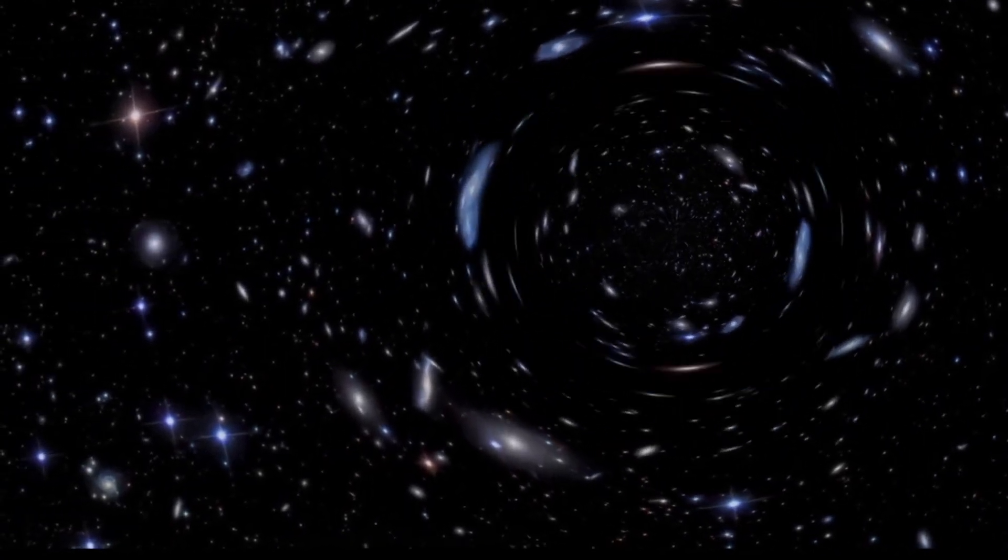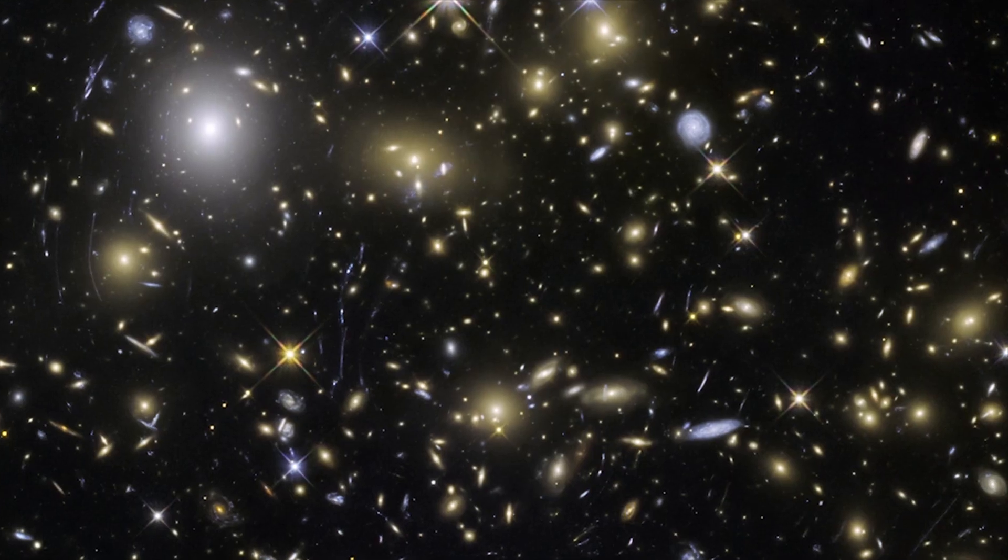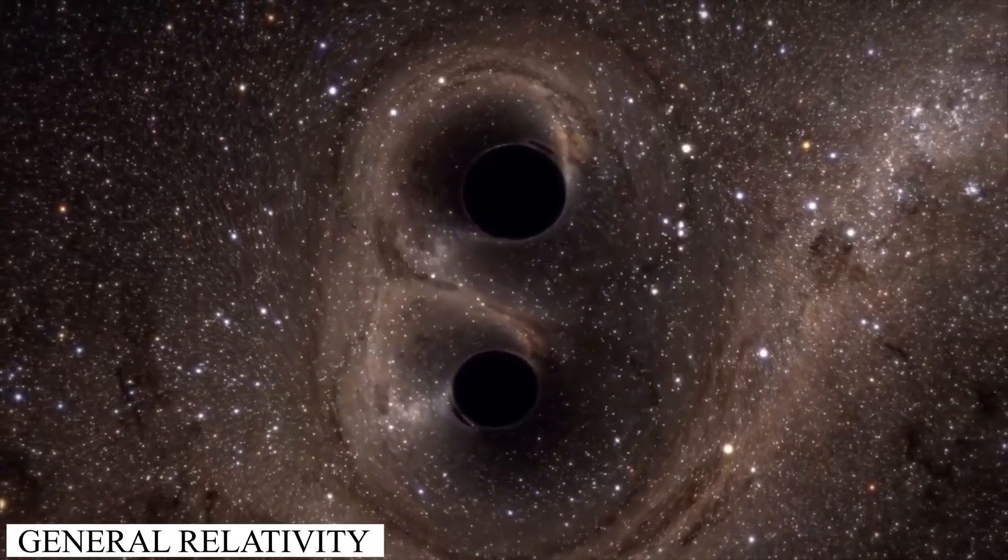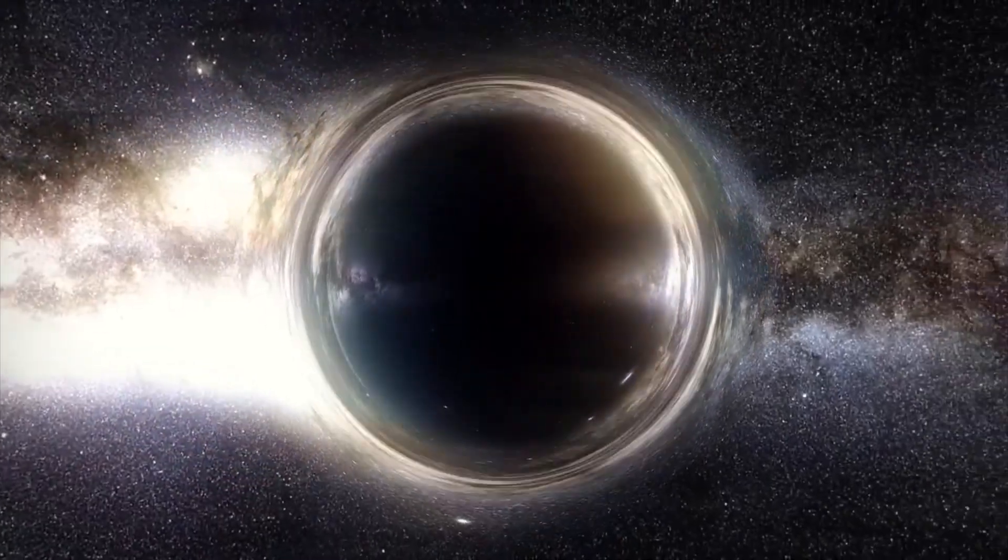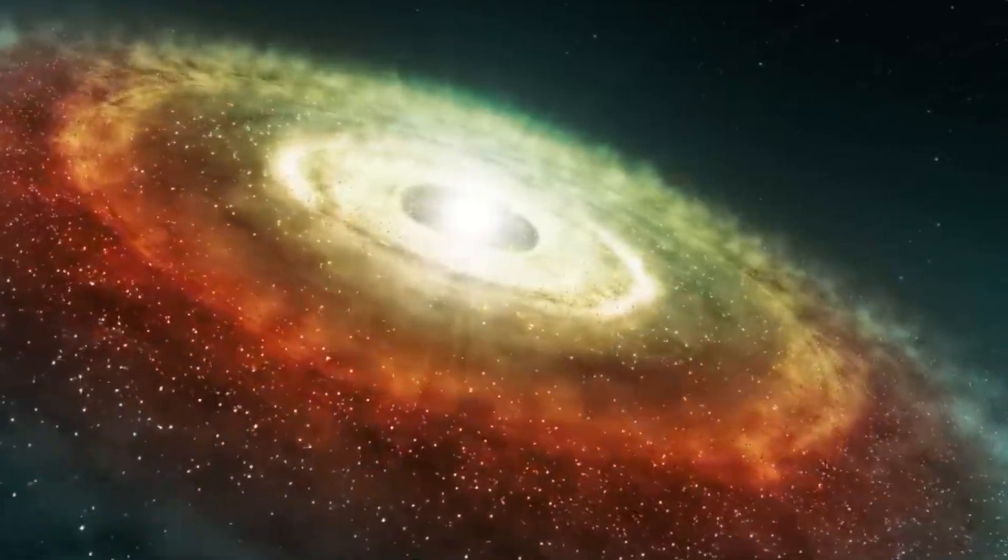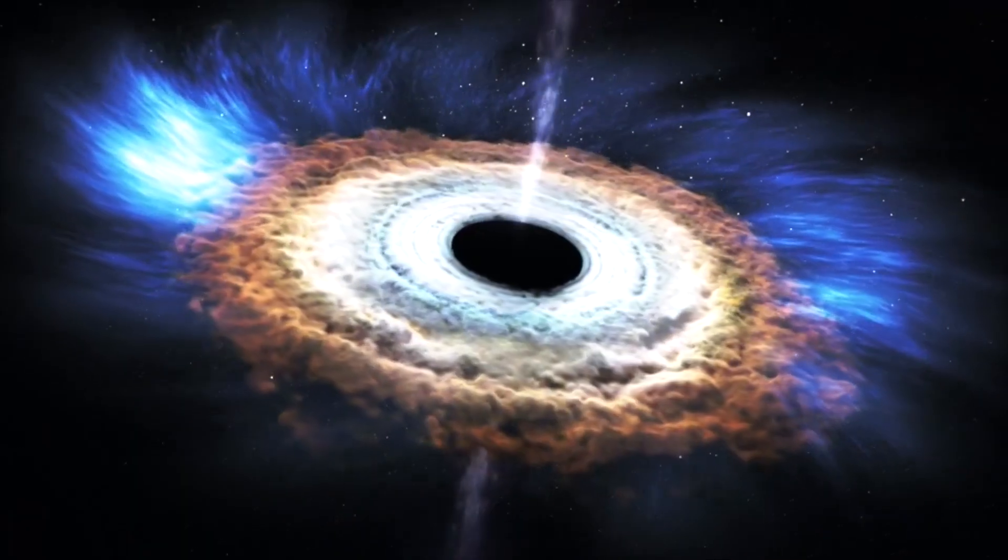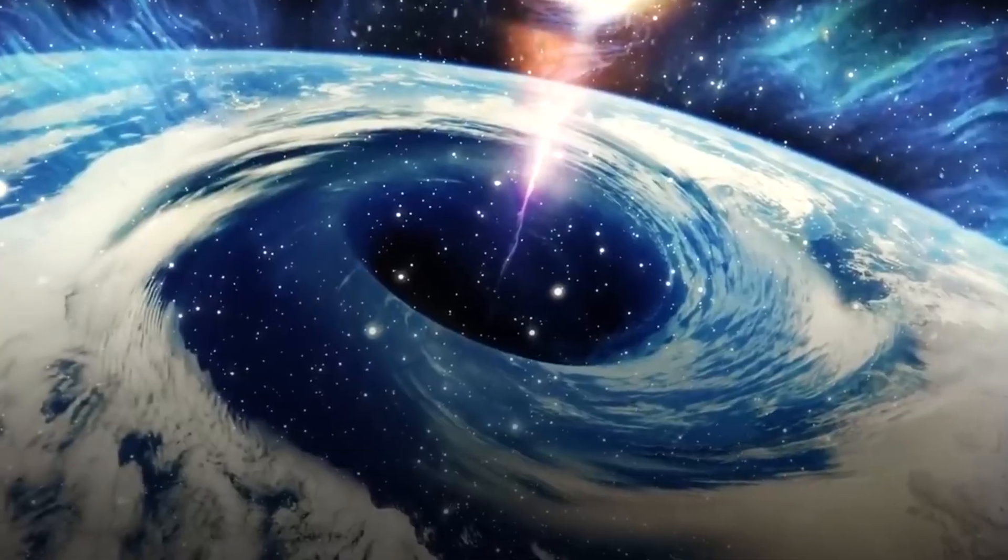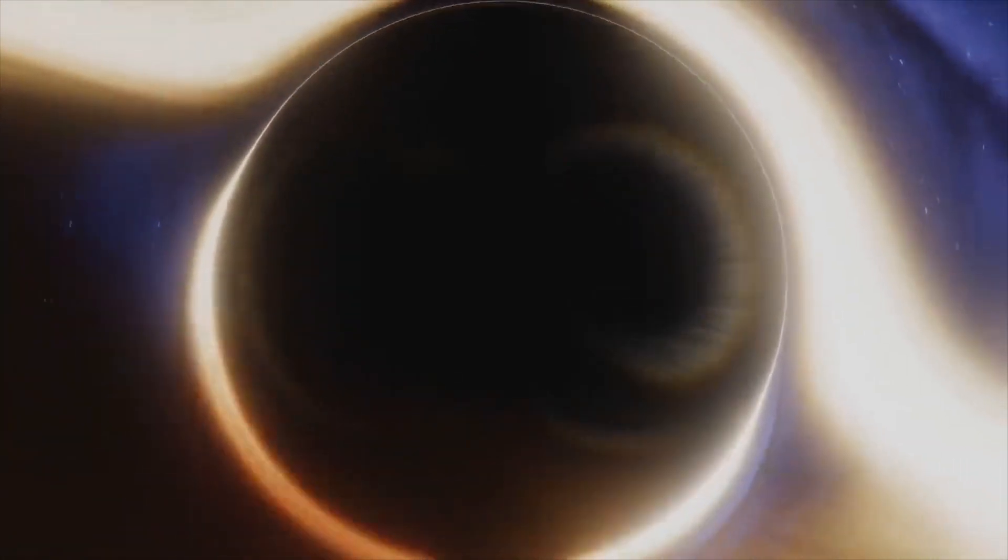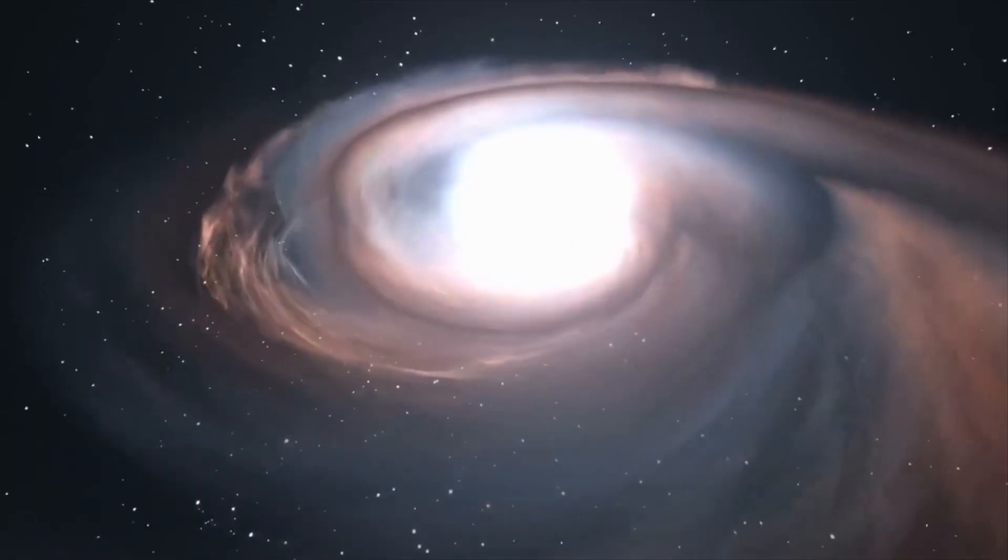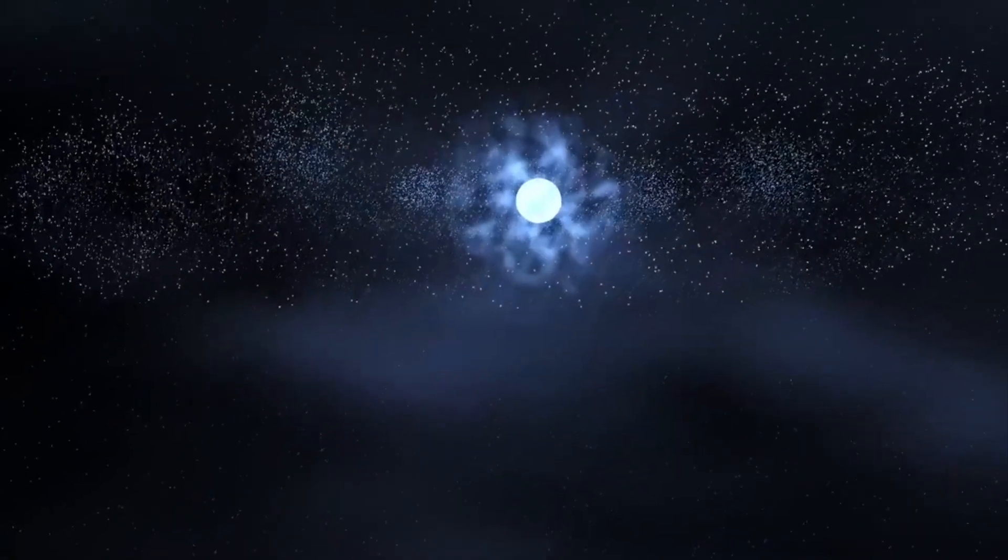Another factor that contributes to the disappearance of stars is the phenomenon known as gravitational lensing. According to Einstein's theory of general relativity, massive objects can bend the path of light as it travels through space. When a massive object, such as a galaxy or a black hole, passes between Earth and a distant star, its gravitational pull can bend the star's light, causing it to appear distorted, magnified, or even completely blocked. This can give the impression that the star has vanished.